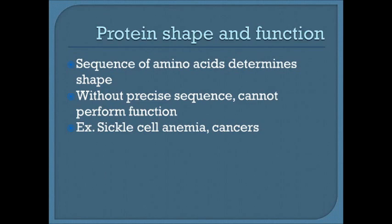The sequence of amino acids in the primary structure determines the protein's shape and function. Without that sequence, the protein cannot perform its function. This is a point where mutations can occur — if off by even one amino acid, the entire function can be disrupted, causing disease processes such as sickle cell anemia and some cancers. In sickle cell anemia, a mutation in the primary structure causes red blood cells to become sickle-shaped instead of the regular biconcave disc, causing clumping and serious health crises.